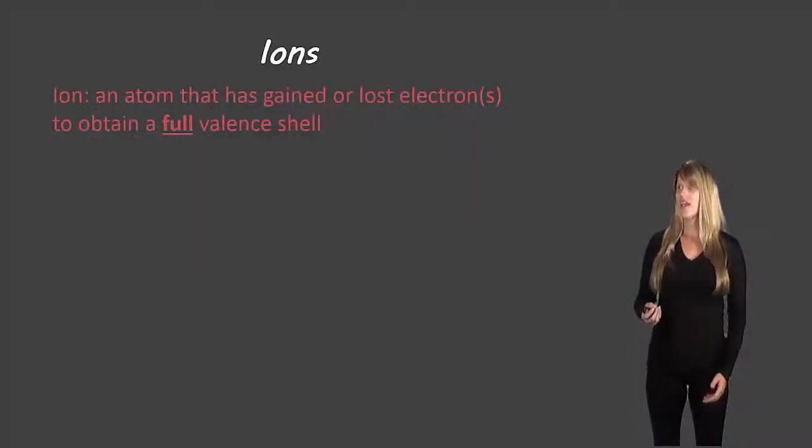So what is an ion? It's an atom that has either gained or lost electrons, and it could be one electron or many electrons, to obtain a full valence shell.